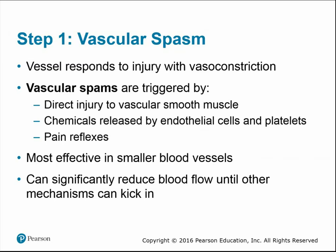Platelet plugs are effective for smaller vessel tears, but larger breaks require the third step: coagulation, where protein fibers called fibrin form a mesh or net to trap red blood cells and platelets and form the clot. Vascular spasm can be triggered by direct injury to the vascular smooth muscle, chemicals released by endothelial cells and platelets, or pain reflexes — it is more effective in smaller blood vessels but significantly reduces blood flow until other mechanisms kick in.